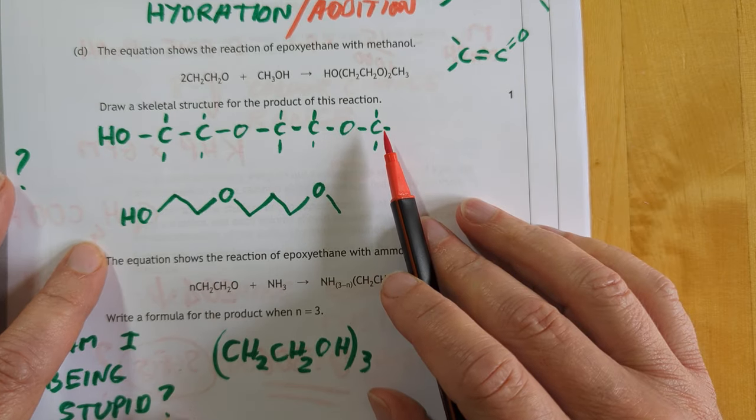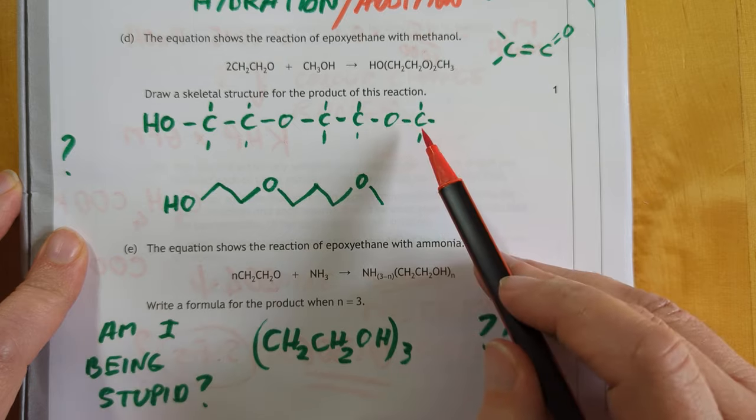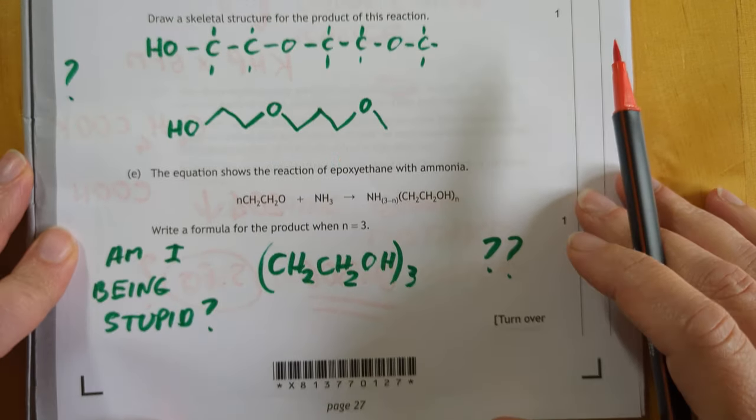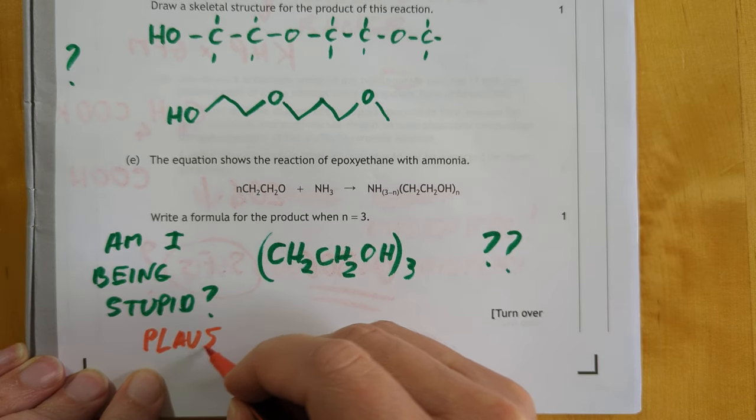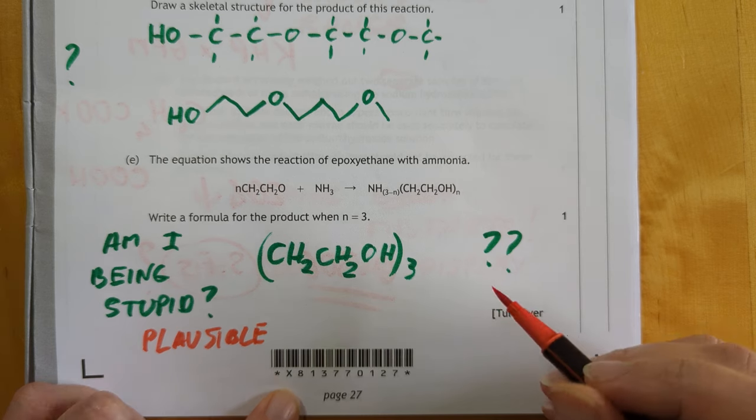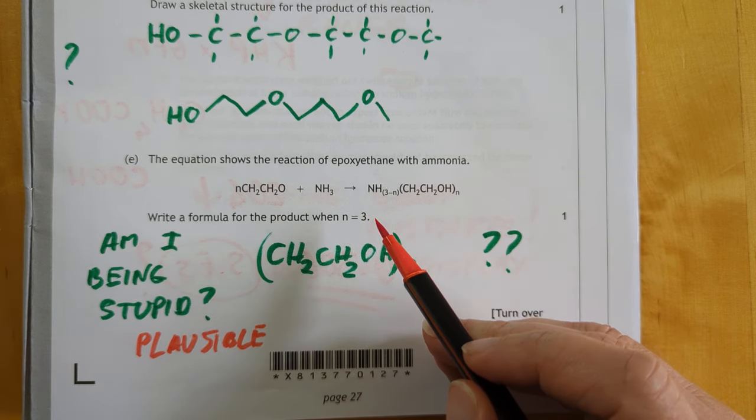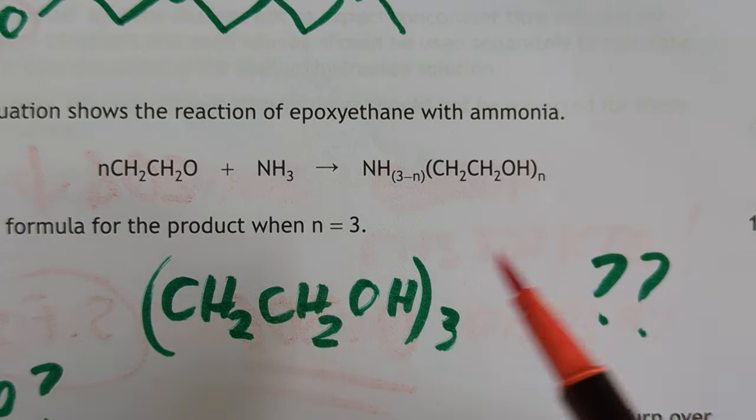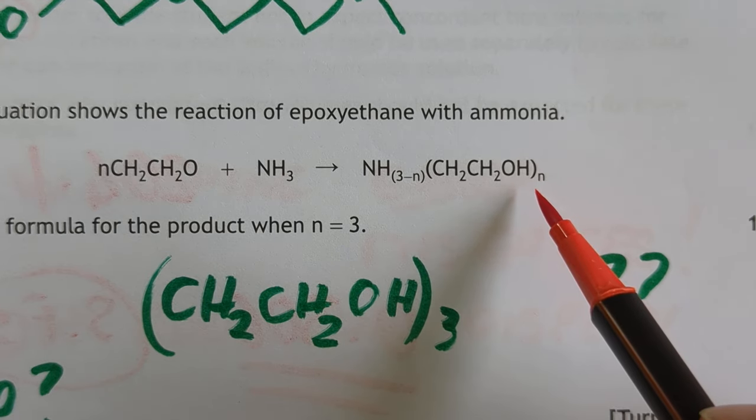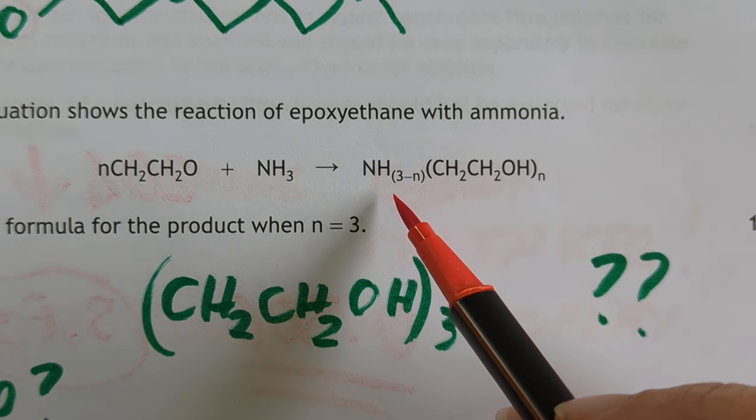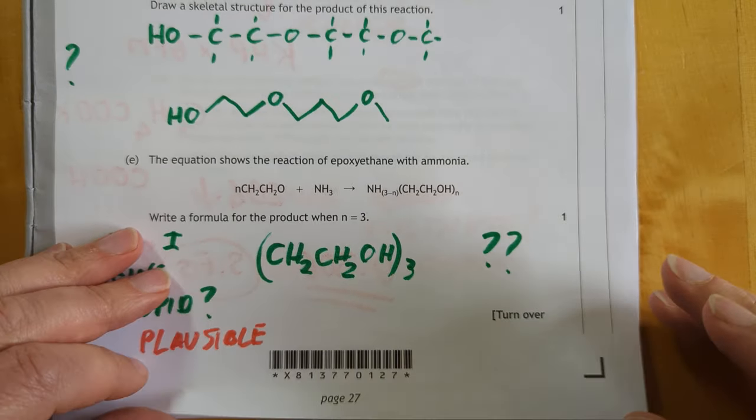This took me an age to figure it out for some reason. I was obviously being thick. But eventually I came up with this structure here. And this one here, again, am I being stupid? That's entirely plausible. Feel free to state in the comments how I think I am because this formula here. Zoom in on this. So there's 3 minus N ammonias and N of these ethanol oils. So if N is 3, does that not mean that there's no ammonias? I'm not sure. Feel free as I said to point out my stupidity in the comments.